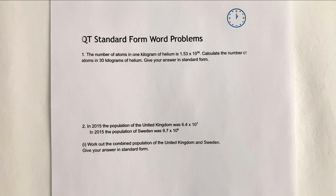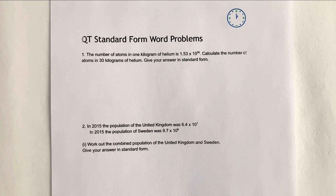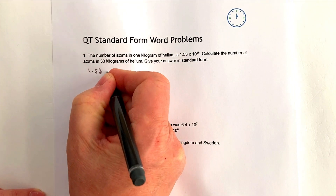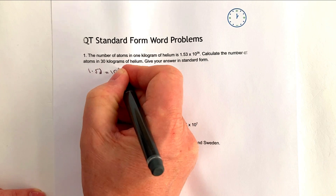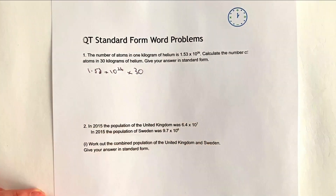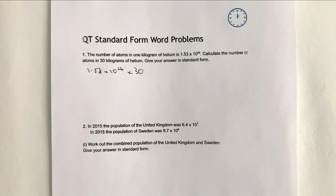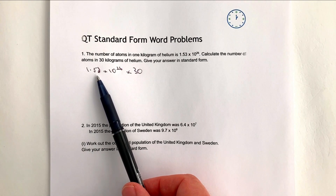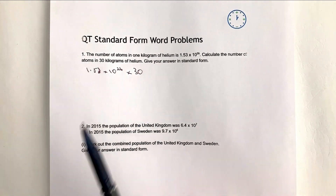The first question: the number of atoms in one kilogram of helium is 1.53 × 10²⁶. Calculate the number of atoms in 30 kilograms of helium, giving your answer in standard form. So what we're doing is multiplying 1.53 × 10²⁶ by 30 to get the answer. The way I'm going to approach this is to completely ignore the standard form part and instead multiply 1.53 × 30.